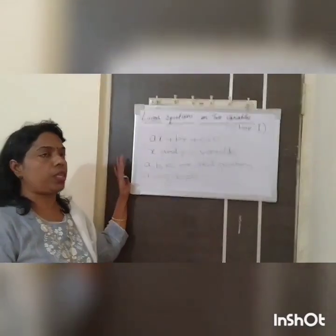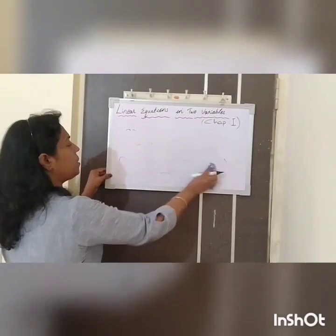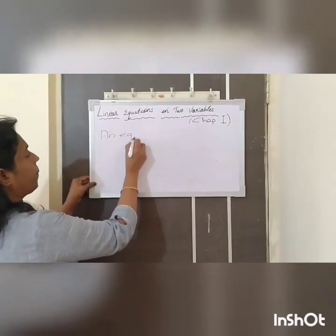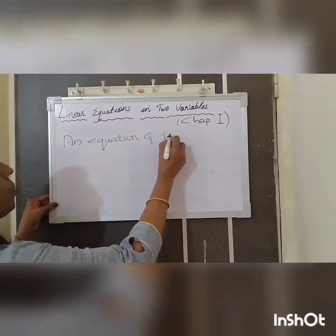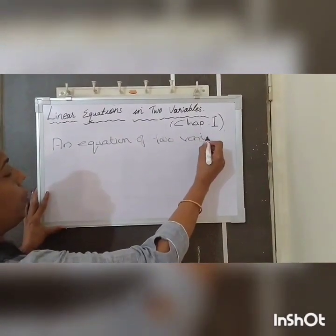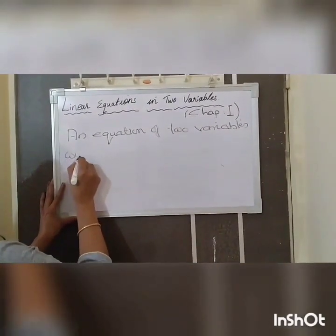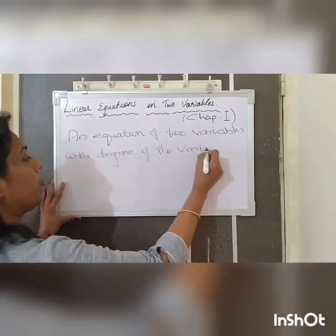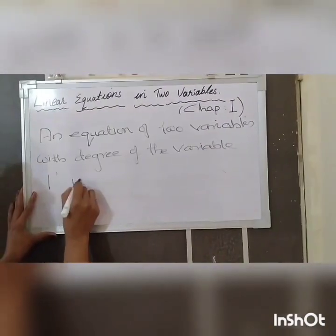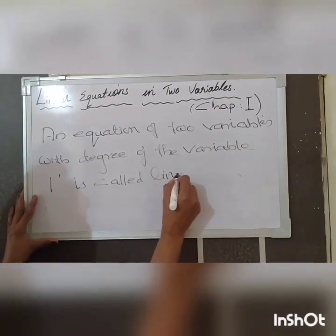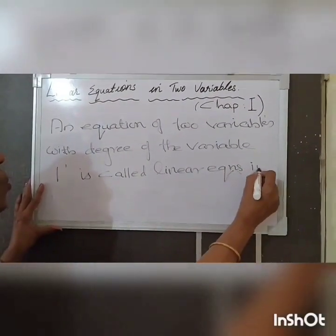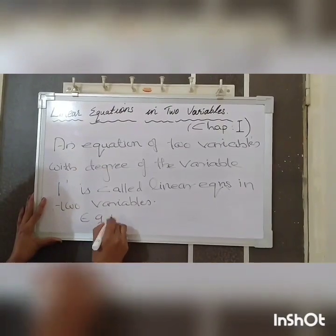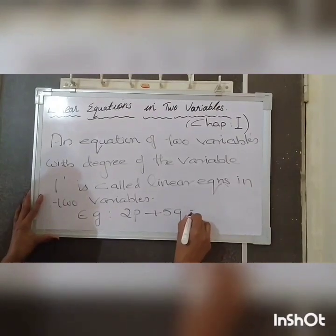An equation of two variables with the degree of each variable equal to 1 is called a linear equation in two variables. For example, 2P plus 5Q equals 13 is a linear equation in two variables.